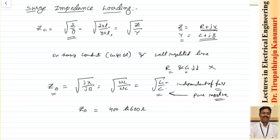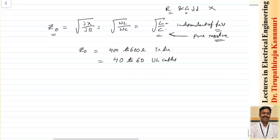For underground cables, conductors are placed side by side, so capacitance dominates over inductance. Therefore, for cables the surge impedance varies from 40 to 60 ohms. This is what is obtained practically. Now, let us see how to calculate or measure the surge impedance.